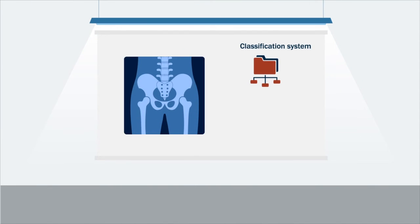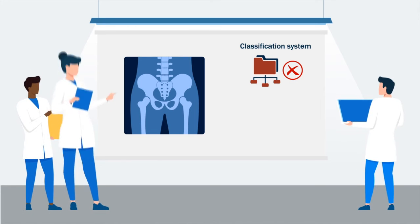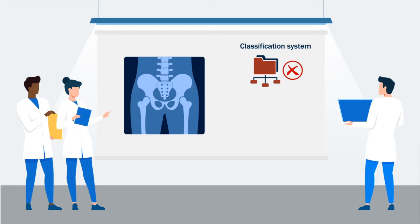Currently, no classification system exists for adolescent ischial tuberosity avulsion fractures that can help orthopedic surgeons understand the severity of injury and likely prognosis to deliver timely aid.